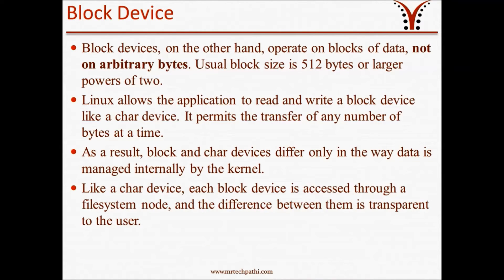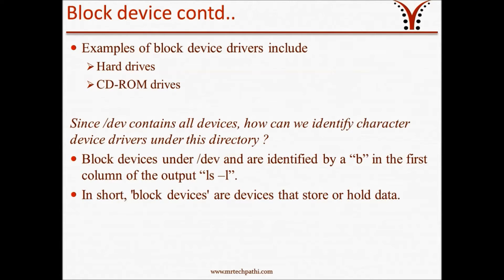Coming to block devices — block devices operate on blocks of data. They don't operate on arbitrary bytes like character devices. The usual block size is 512 bytes or a larger power of 2. Linux allows the application to read and write a block device like a character device, and it permits the transfer of any number of bytes at a time. As a result, block and character devices differ only in the way data is managed internally by the kernel. Like a character device, each block device is accessed through a file system node, and the difference between them is transparent to the user. Examples of block device drivers include hard drives, disks, and CD-ROM drives.